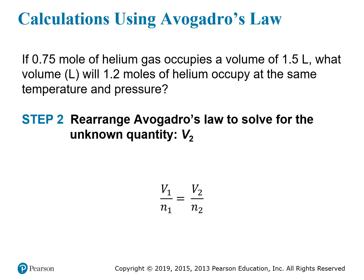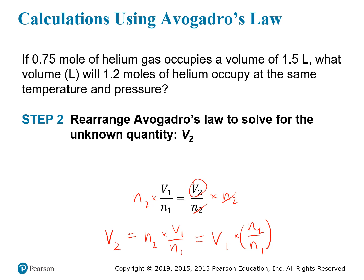We can rearrange Avogadro's Law to solve for the unknown quantity. Here is V2, the quantity that we want. To get it by itself, we multiply both sides by N2 — that cancels N2 on the right-hand side, leaving V2 on its own. So the final expression is: V2 equals V1 times N2 over N1.